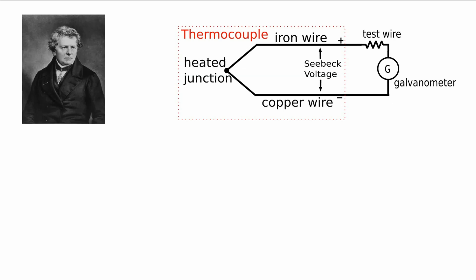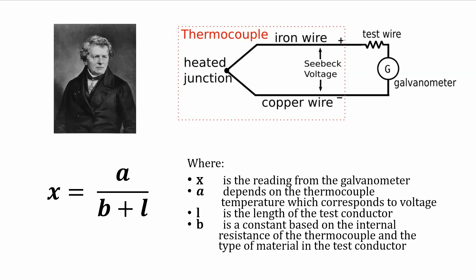He determined the law of proportionality between the voltage and the current as X equals A over B plus L, where X is the galvanometer reading, L is the length of the test conductor, A depends on the thermocouple temperature which corresponds to voltage, and B was a constant based on the internal resistance of the thermocouple and the type of material used.